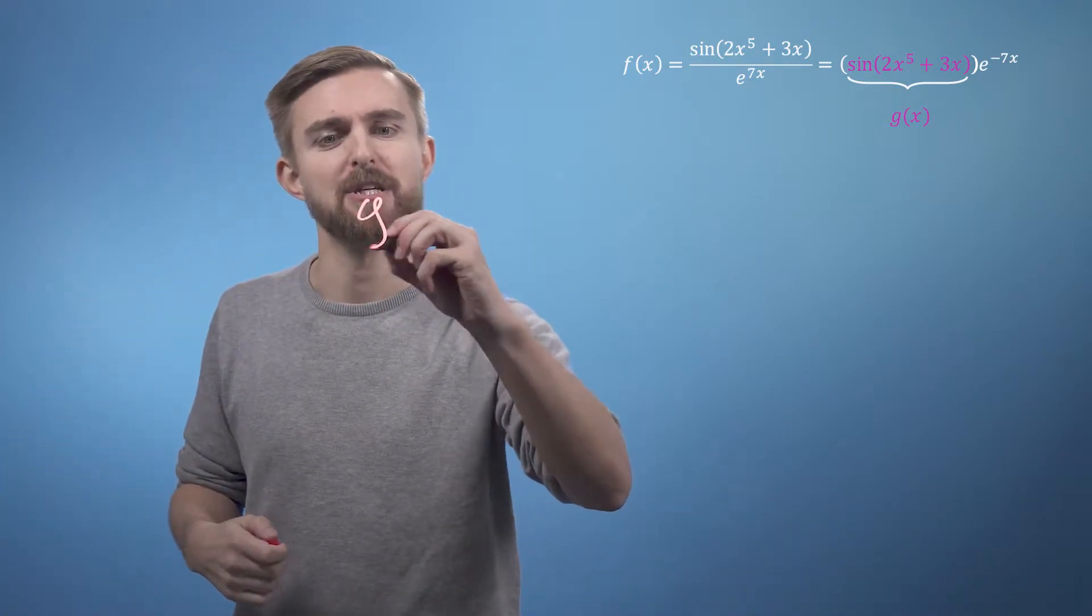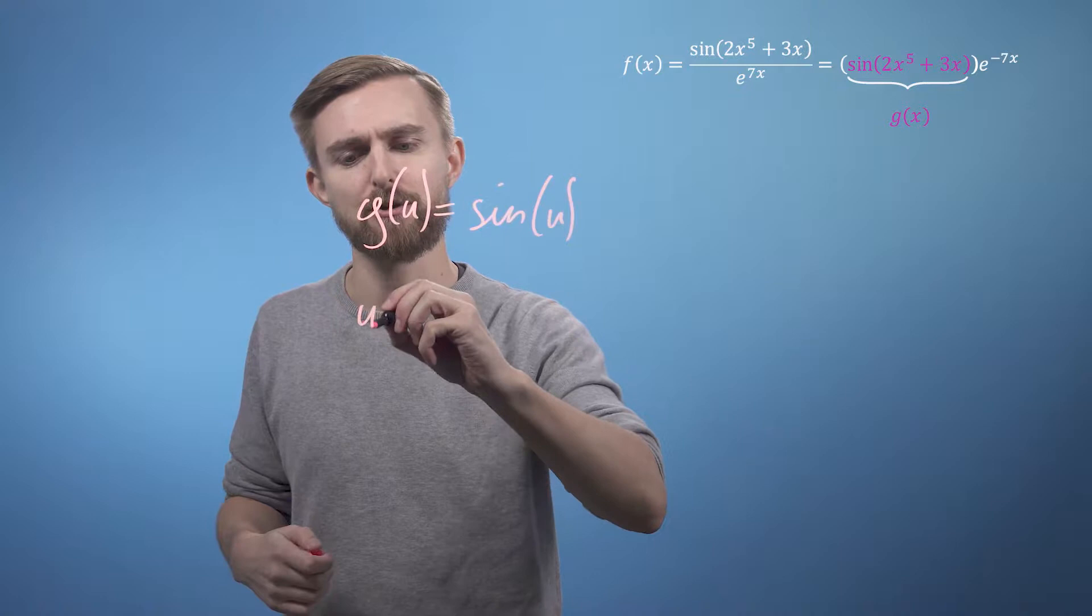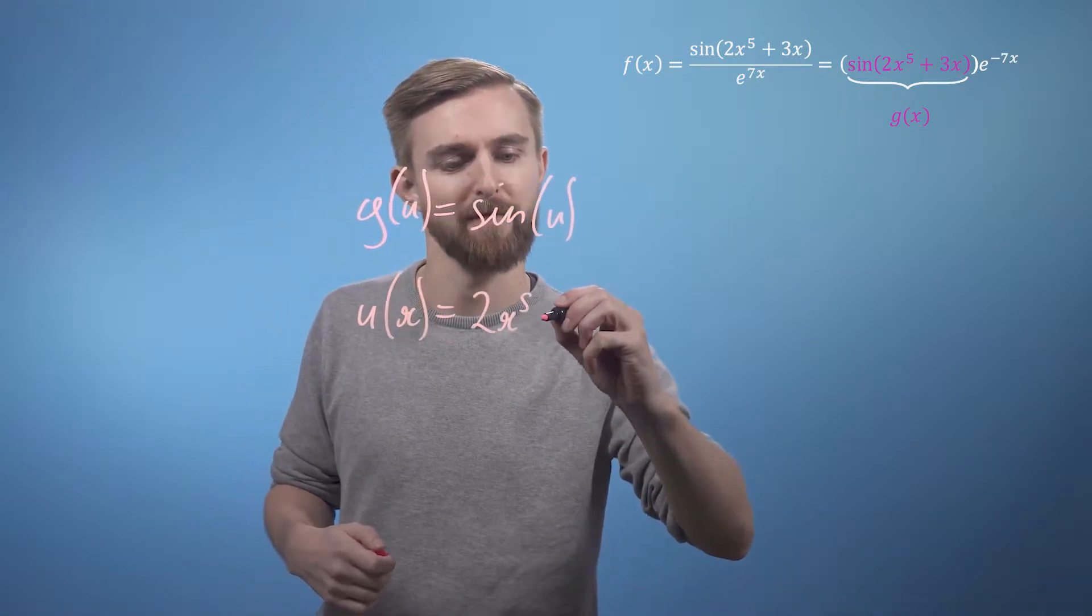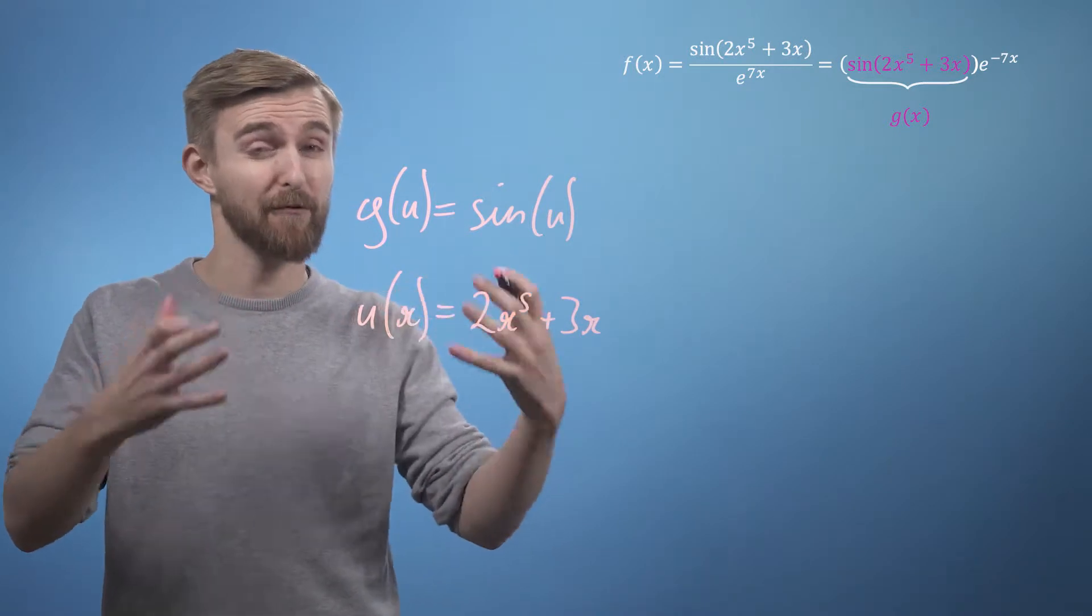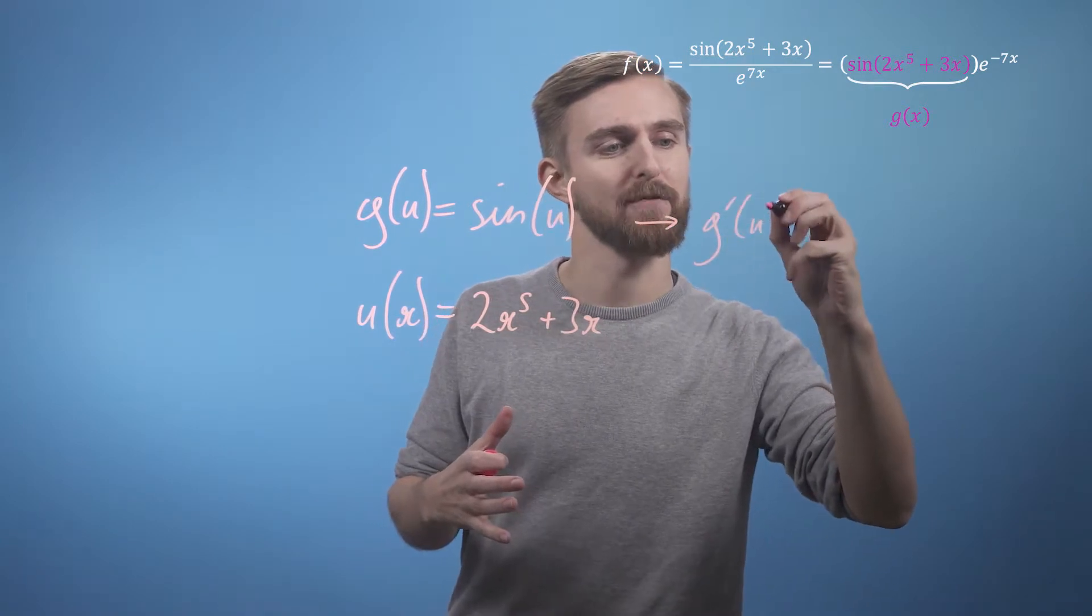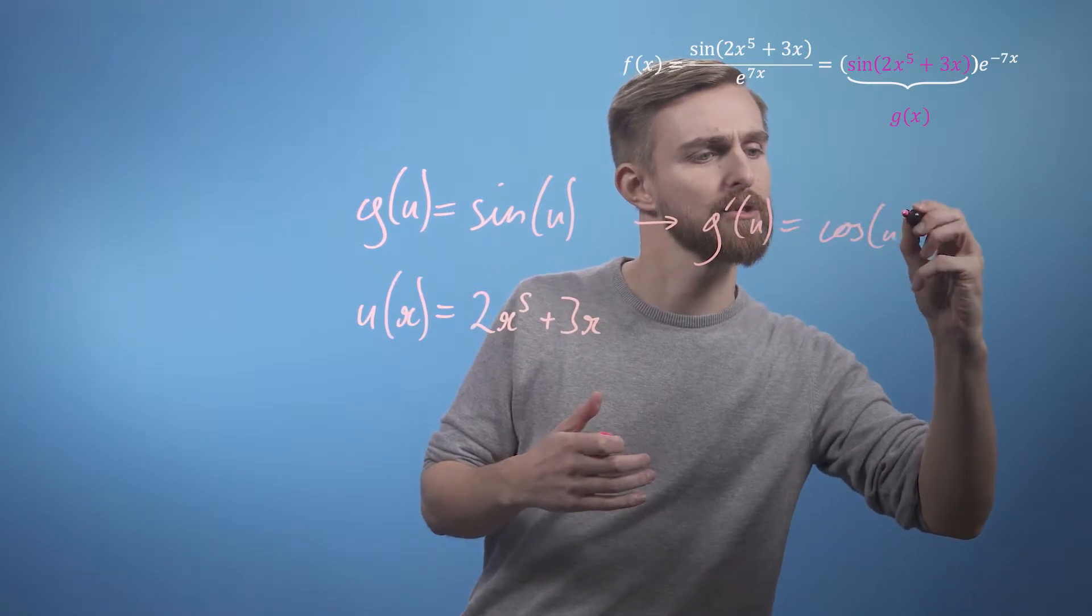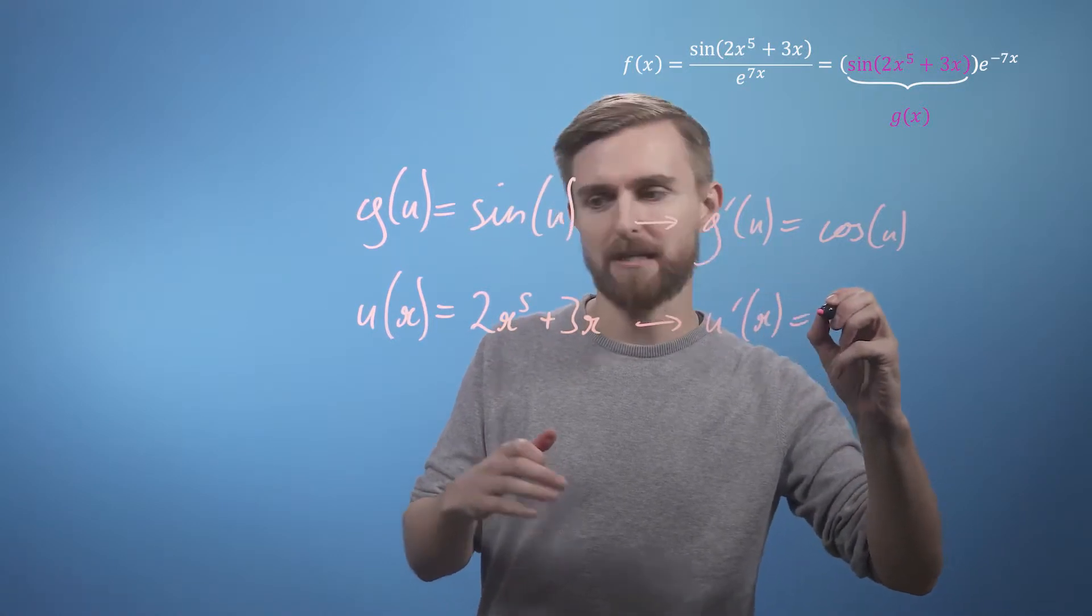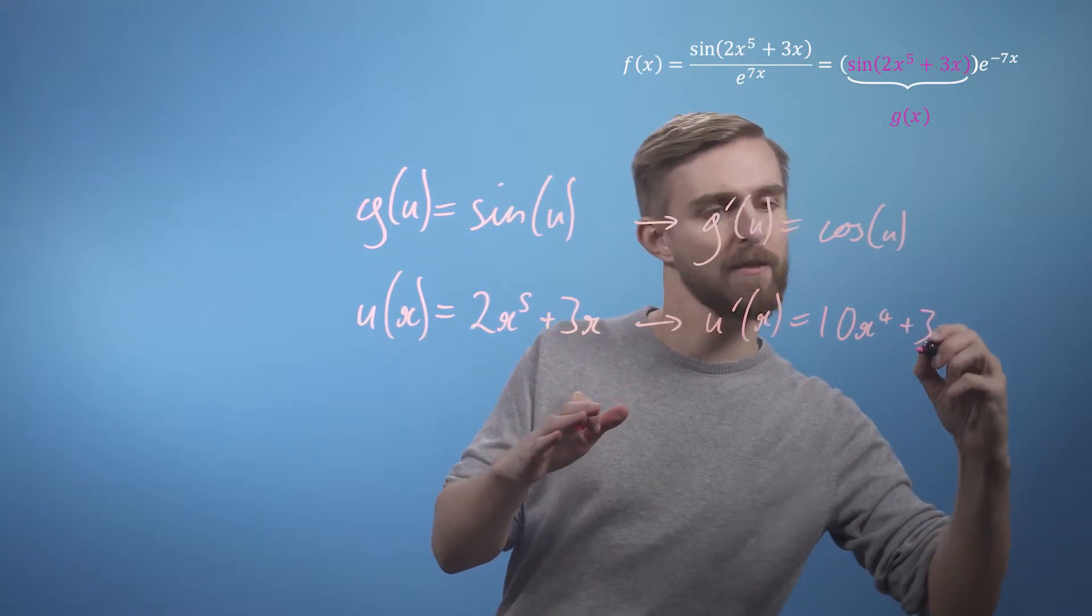So we can take g of u equals sine of u and u of x equals 2x to the power of 5 plus 3x. Now we've got these two separate functions and we're going to want to differentiate each of them in order to apply the chain rule. So we say, okay, g dash of u is going to just equal sine differentiates to cos, so cos u, and u dash of x is going to equal 10x to the power of 4 plus 3.